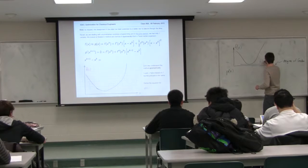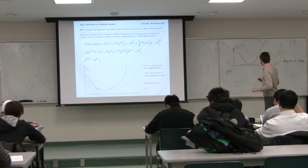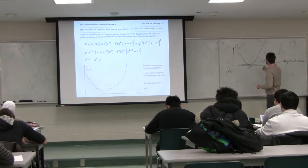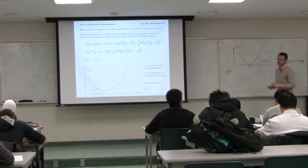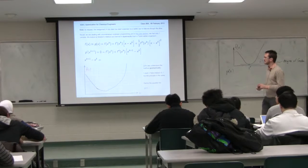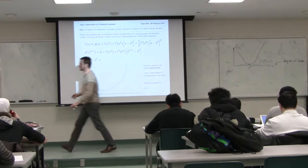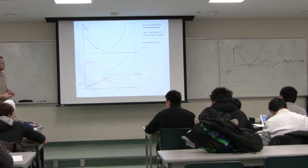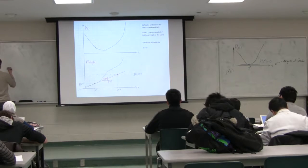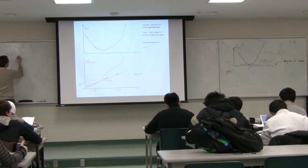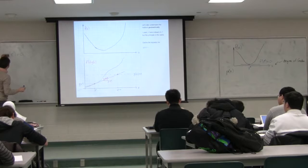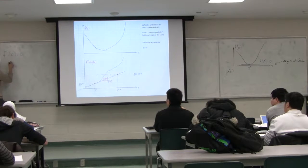What we said last class is that a necessary condition for an optimum is that f of x has its first derivative equal to zero at the optimum. So at x star, f prime equals zero. We can convert our optimization problem to what we called a root-finding problem in 3E — if we write f prime of x equals zero and solve that equation, we've found our optimum.